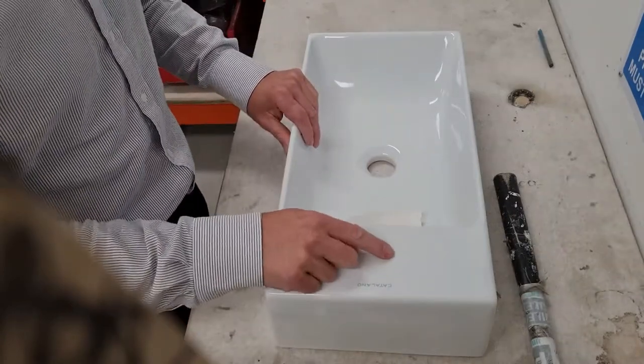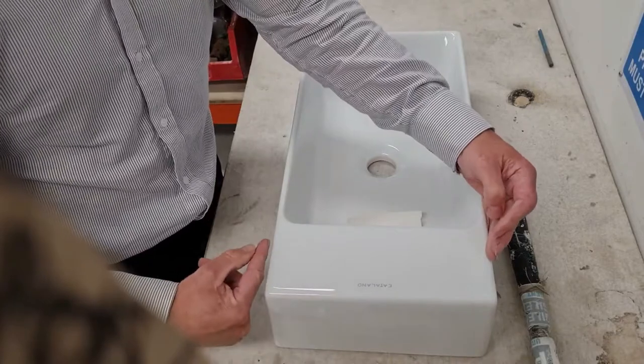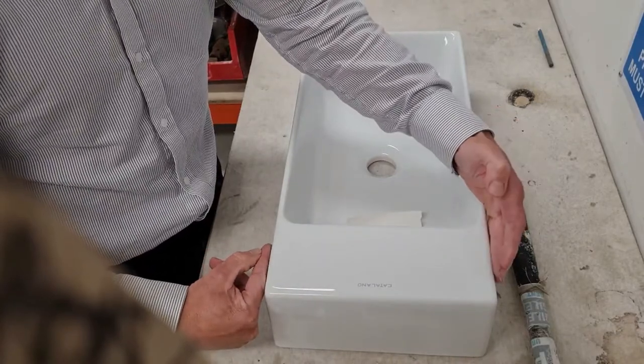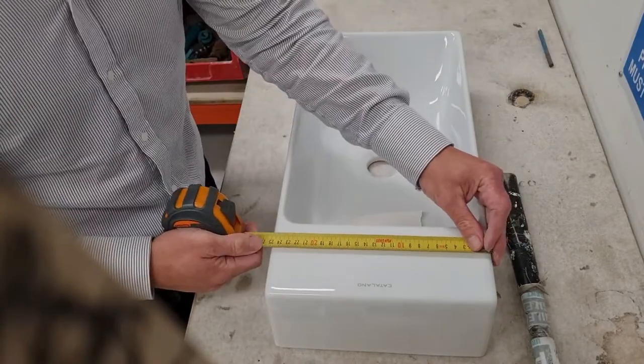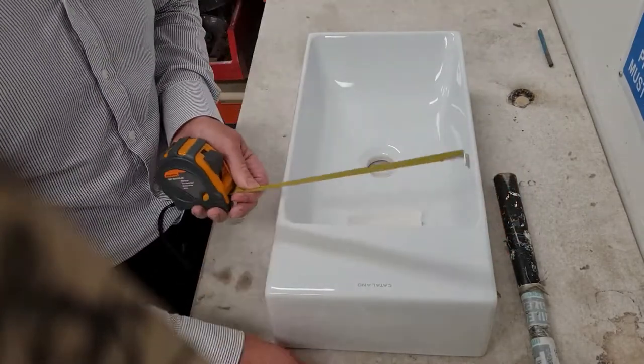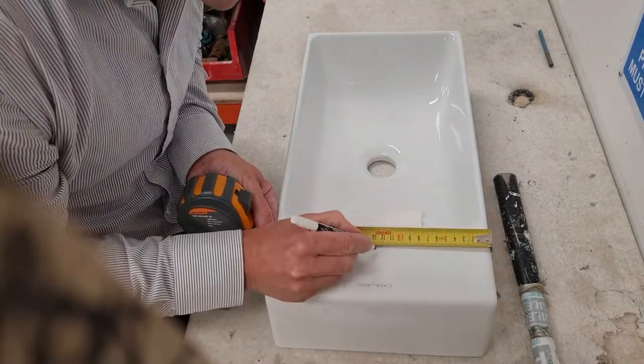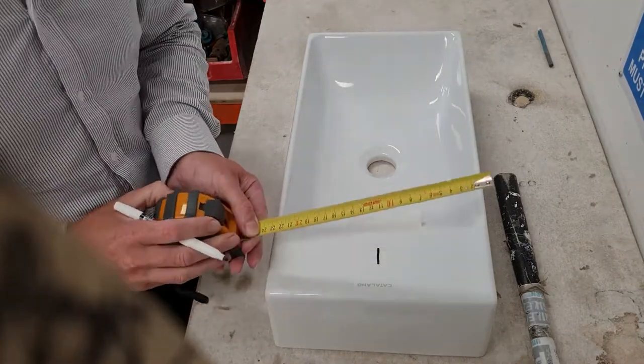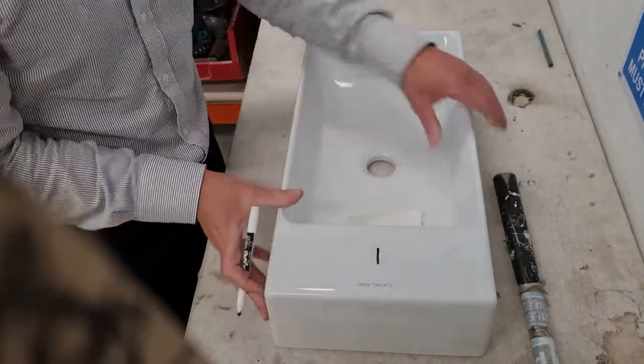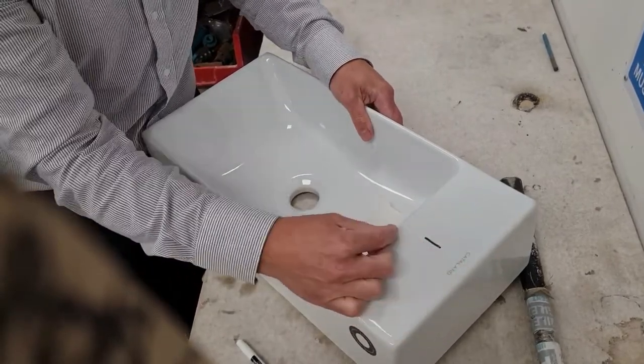Now what we're going to do is - it's pretty simple - it's going to be a center tap hole. So measuring from here to here, we just take the center. So what have we got? We've got 250 mil, so let's mark the center. This doesn't have to be super accurate. There we go, 125, so that's our center.